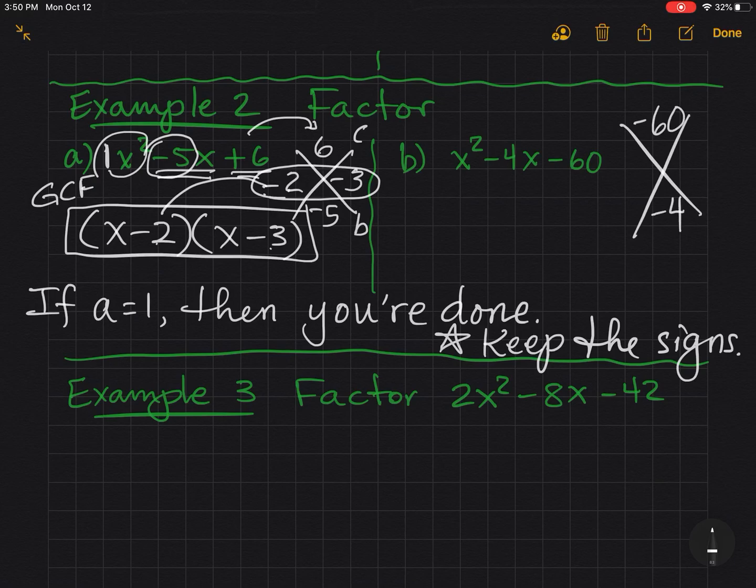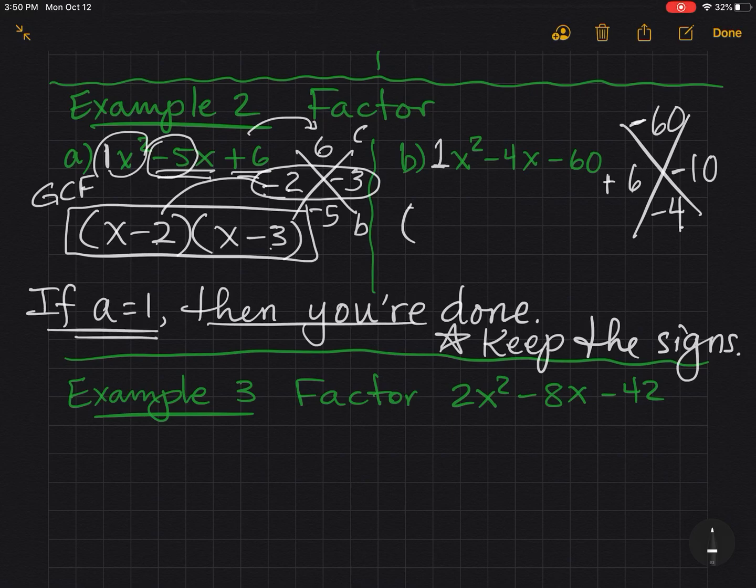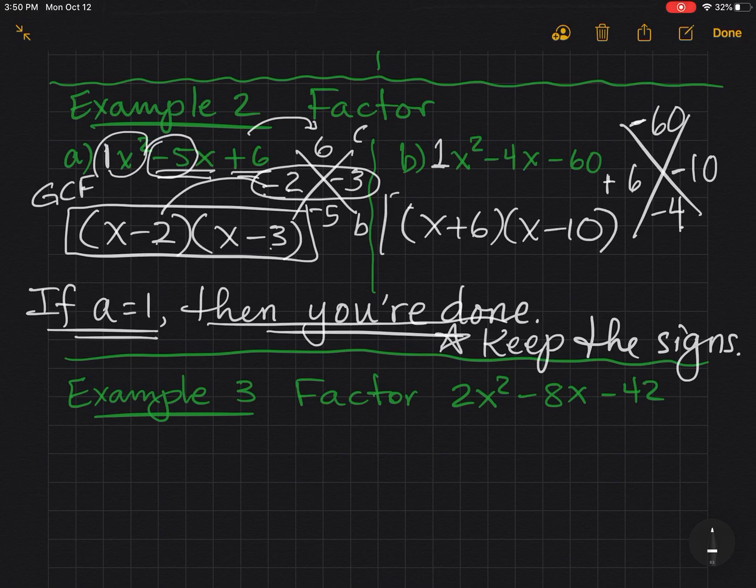Negative 60 on top, negative 4 on the bottom. I'm thinking maybe 6 times 10, and then I can play with the signs. To get a negative on top, one has to be positive and one negative. So if I make the 6 negative, that doesn't work out. When I add them together, I won't get the negative 4. So I'm going to make that one positive and this one negative. And that's going to work. And that's my answer. Because the leading coefficient is 1. If a is 1, then you're done. So I have x plus 6 times x minus 10.